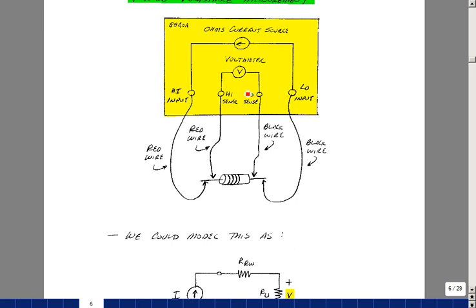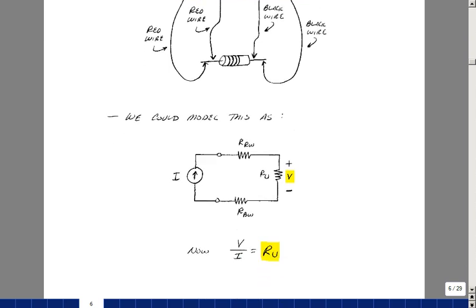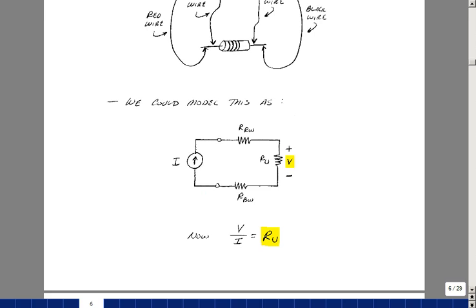So in reality now we're measuring the voltage across the sample and we're forcing a known current through the sample. And so the ratio of this voltage to this current is the value of the unknown resistance.